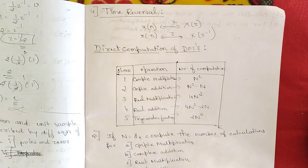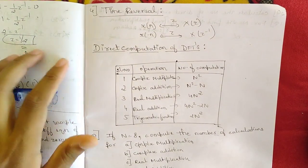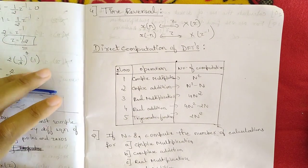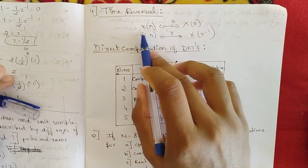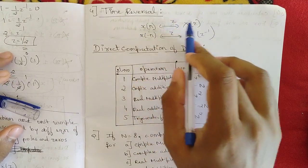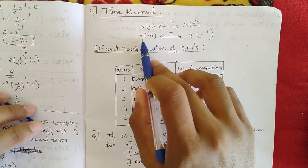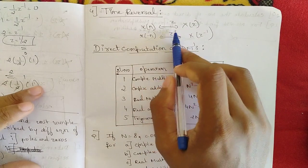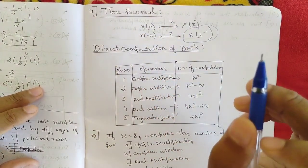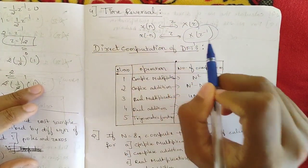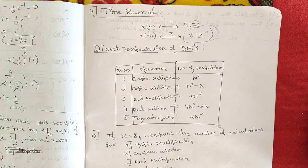The next important property is time reversal — very easy. One sequence represented in the Z-plane as X(z): the time reversal, x(−n), is represented in the Z-plane as X(z⁻¹).